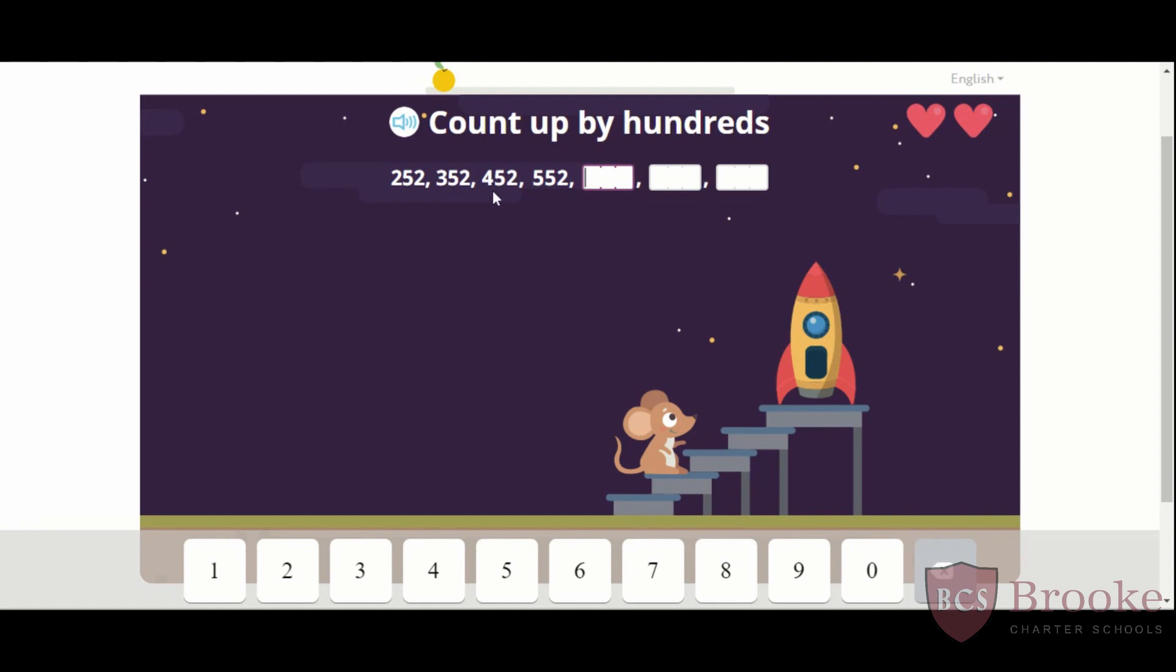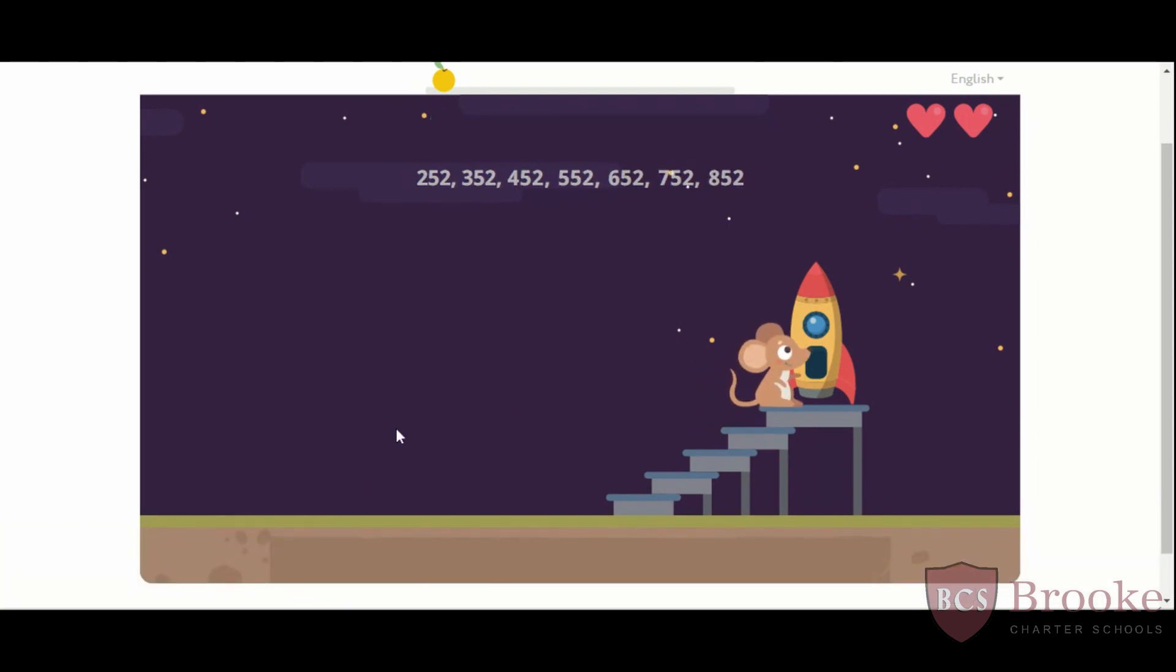252, 352, 452, 552. Next is? Good, 652. Then? Good, 752. And last in the pattern, 852. Nice job. Way to go, our mouse made it to his rocket ship.